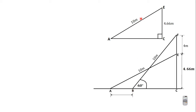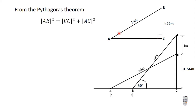Considering triangle AEC, we know that AE is 10 meters and EC is 4.66 meters. So we can find AC from this triangle by applying the Pythagorean theorem: AE² = EC² + AC².